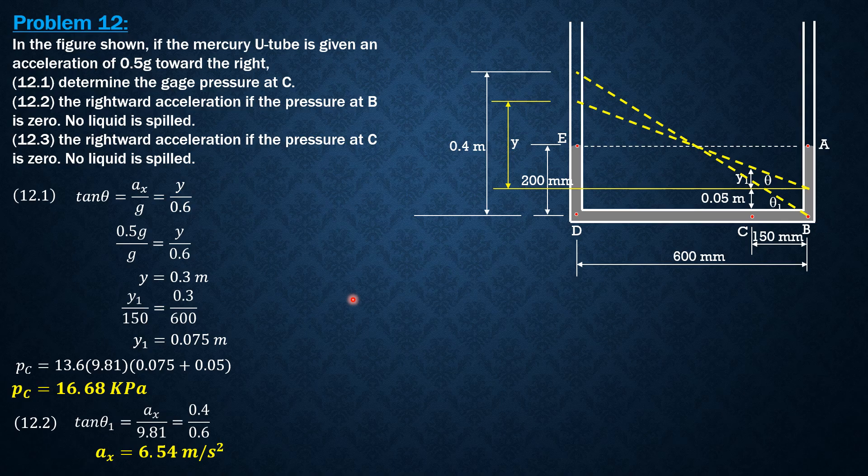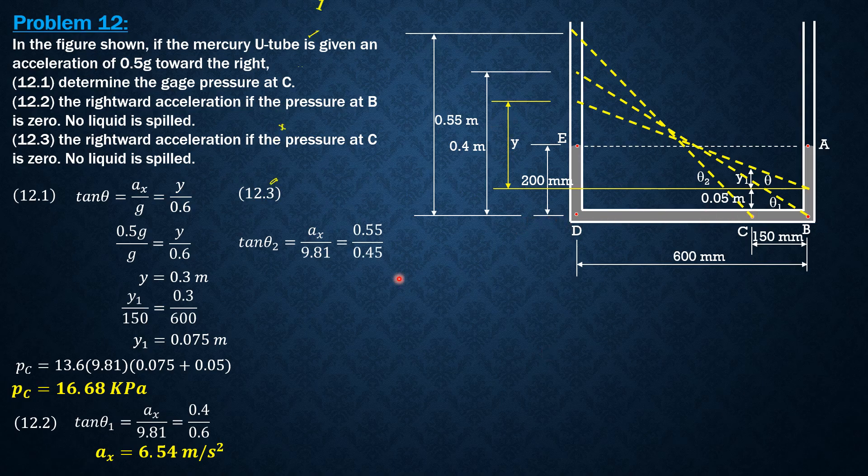Lastly, the rightward acceleration if the pressure at C is 0. Meaning to say, the surface will cross C. The total rising, lowering of A would be 200 plus 150 or 0.35. E will rise also by 0.35. The total height here is 0.55. This should be the imaginary surface. This is theta 2 and this height is 0.55, where 0.55 is 0.2 plus 0.2 plus 0.15. However, this distance here is 0.45 only or 450 mm because the imaginary surface will cross C. Tangent of theta 2 equals AX over 9.51 equals 0.55 over 0.45. This is 0.45. AX is equal to 11.99 meters per second square.